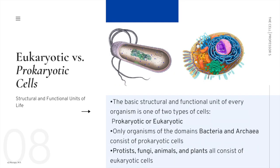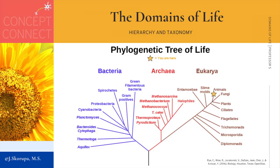The basic structural and functional unit of every organism is one of two main types of cells: prokaryotic or eukaryotic. Eukaryotic cells have organelles, and prokaryotic cells do not. Organisms of the domains bacteria and archaea consist of prokaryotic cells, while organisms in the domain eukarya consist of eukaryotic cells. Within the domain eukarya, there are kingdoms — protists, fungi, animals, and plants — which all consist of eukaryotic cells.